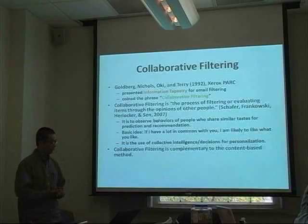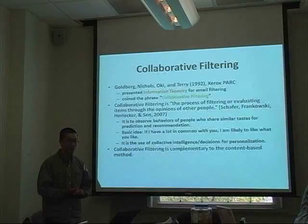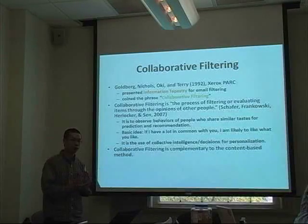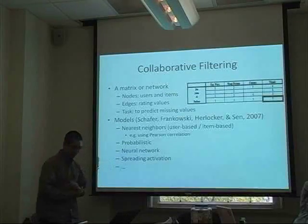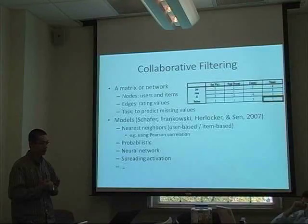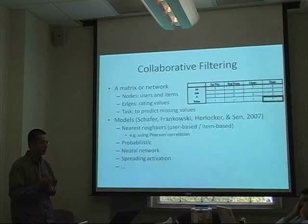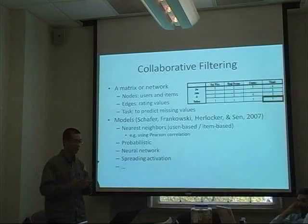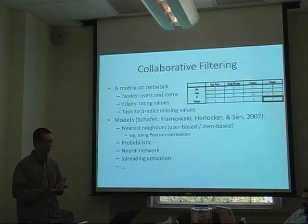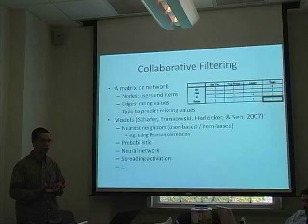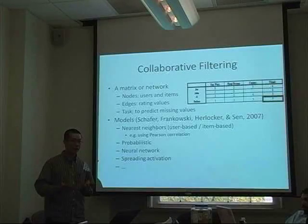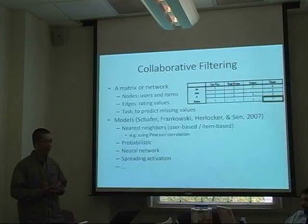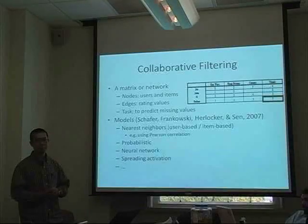Collaborative filtering is usually complementary to the content-based method, and they are typically used together in systems. Collaborative filtering systems usually assume that there is a matrix or network of users and items, where rating values connect the users and items, and the task is to predict missing values.